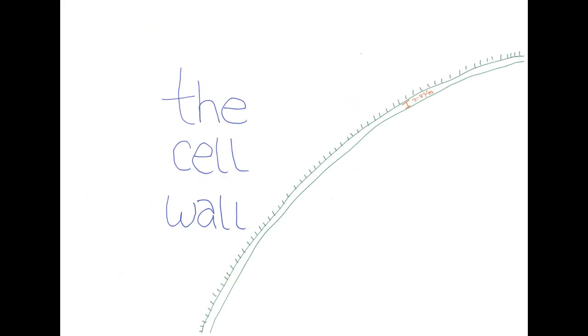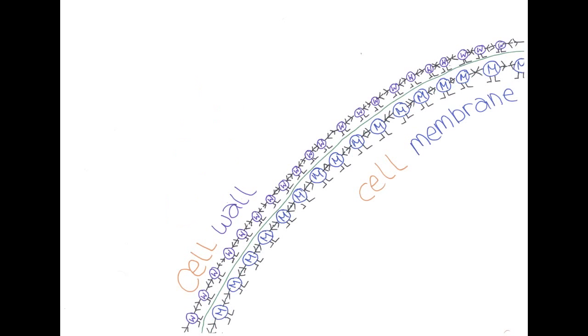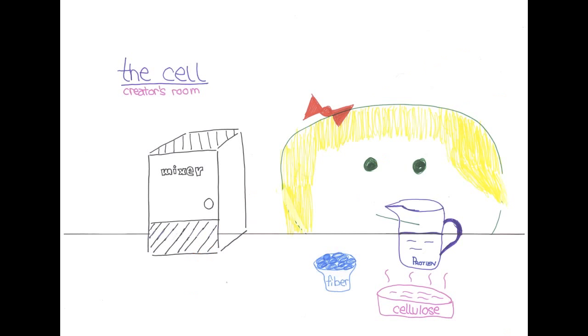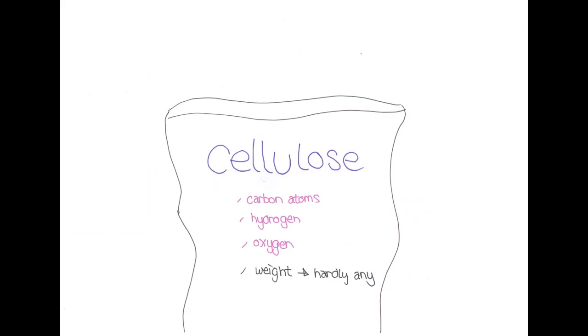The cell wall wraps around the cell membrane, providing more support and protection for the cell. The cell wall is made of cellulose, fiber, and proteins. Cellulose is made of atoms: carbon, hydrogen, and oxygen.